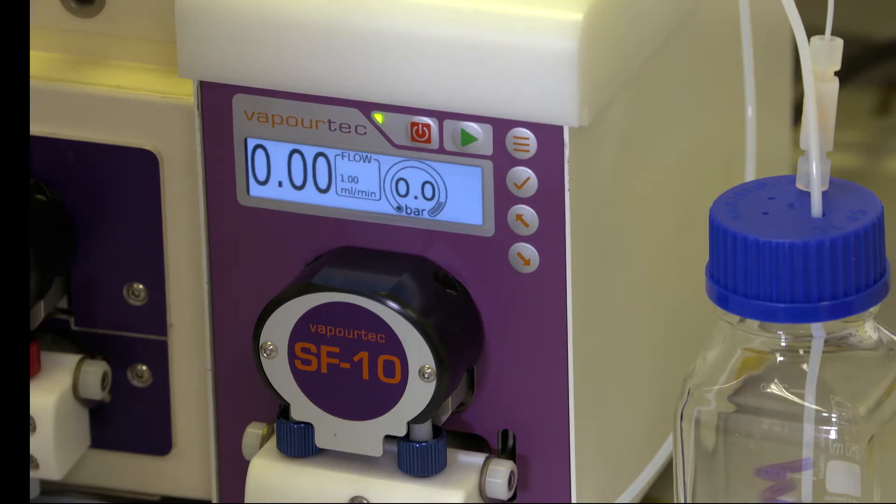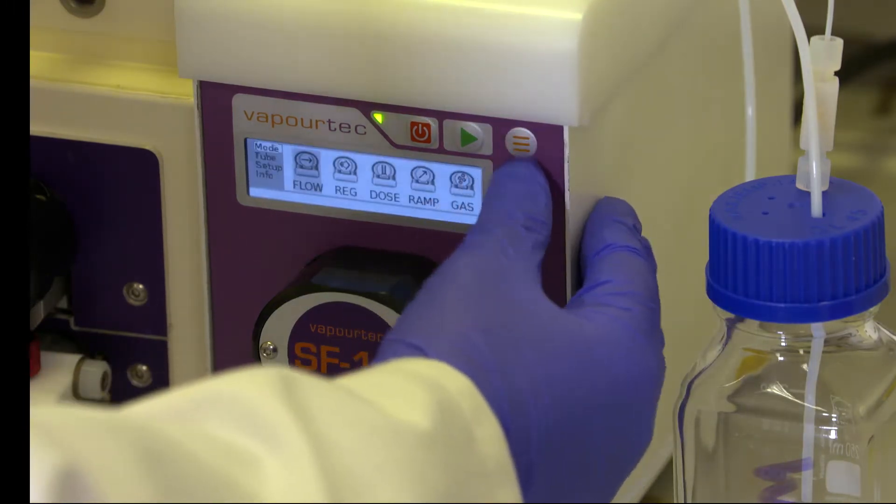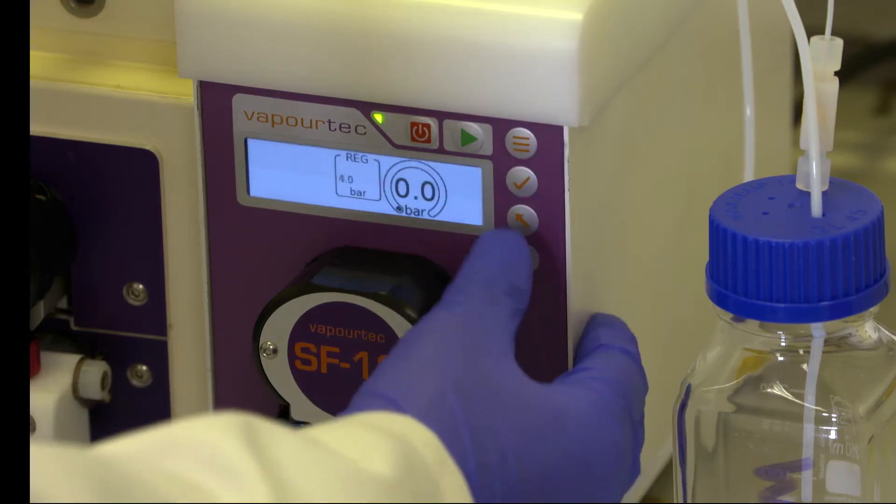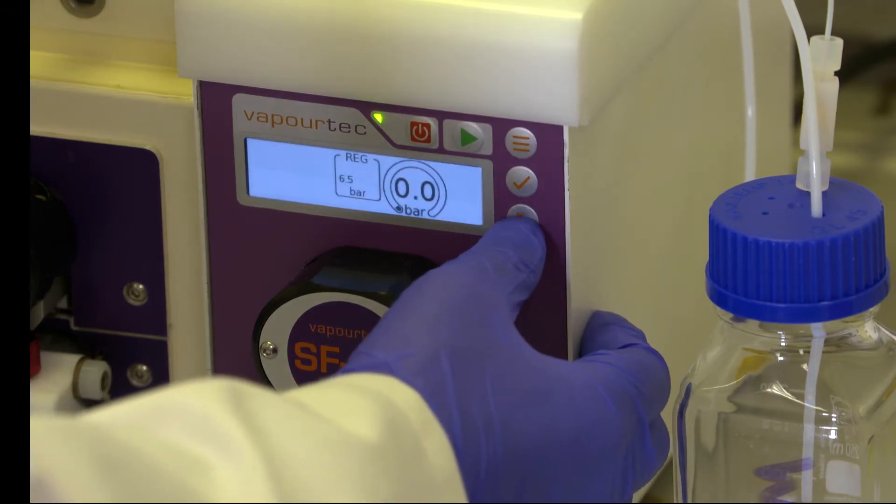To use the SF10 as a back pressure regulator, first I need to put it into regulation mode and then I need to set the pressure that I want to operate at.